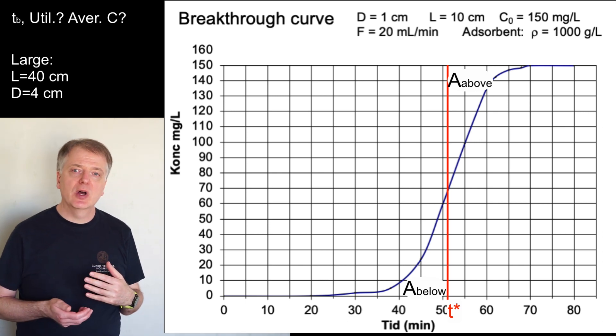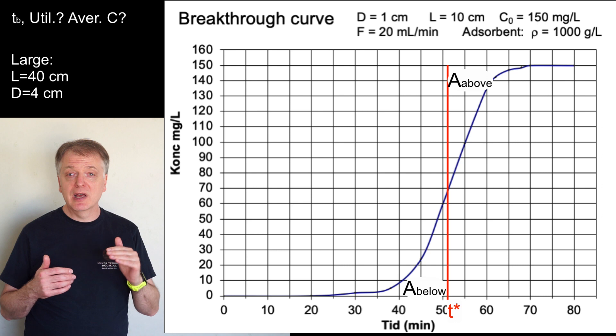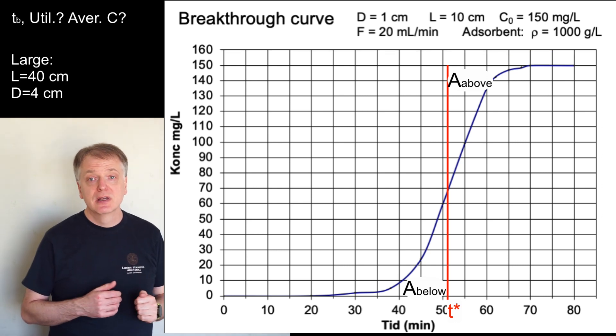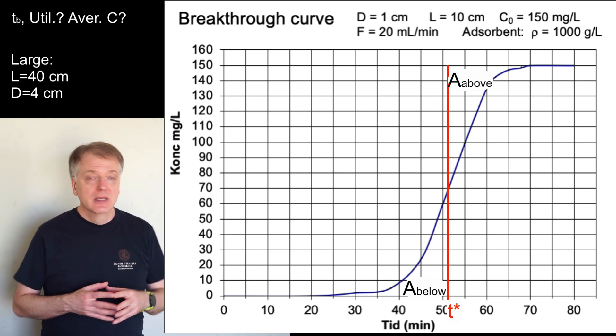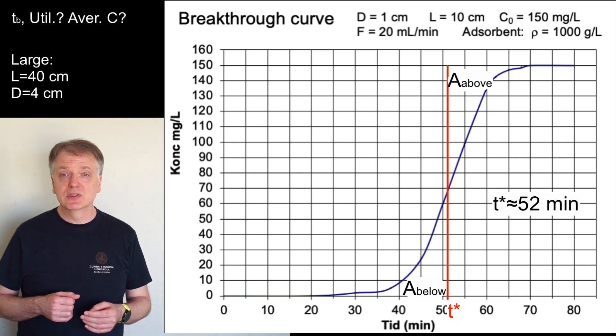Note that when we calculate the area above the breakthrough curve we only count the area up to the line representing a concentration of 150 mg per liter as that is our inlet concentration. It seems in this graph that T star is approximately 52 minutes.